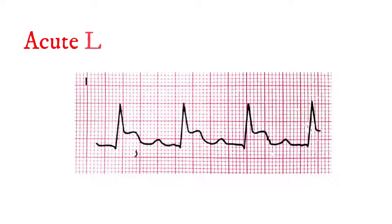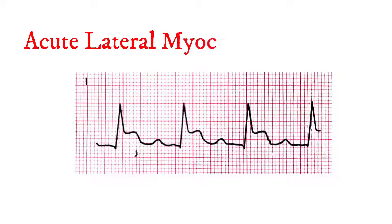Typical changes of acute lateral myocardial infarction are seen in lateral leads 1, AVL, V5, and V6.